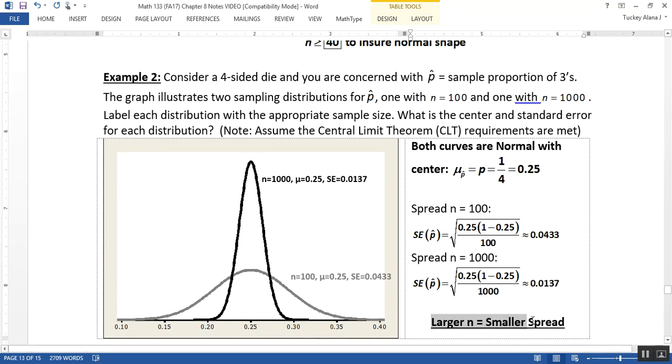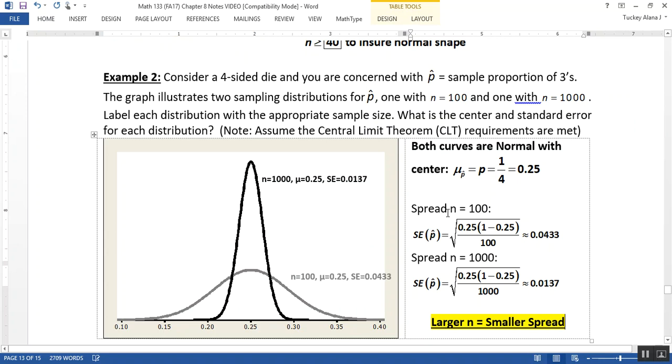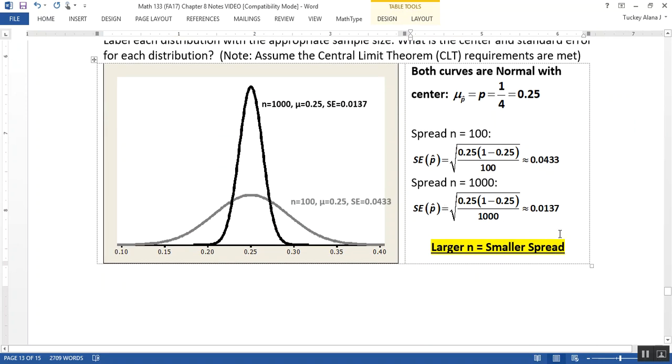And, of course, this idea right here is one of the big ideas for the central limit theorems, both of them, as a whole. As we increase our sample size and we look at this distribution of sample means or sample proportions, we're going to have smaller spread and more normal curves.